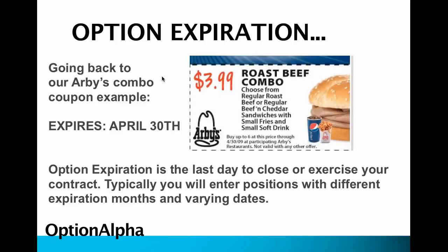In this example with our Arby's roast beef combo — because I love Arby's — you can see right down here that the expiration date is 4-30-2009. So this is an old coupon obviously, but you can see that this coupon expires on April 30th. Just like an options contract, the coupon is very similar. You have the choice to buy this Arby's roast beef combo for $3.99 before April 30th.